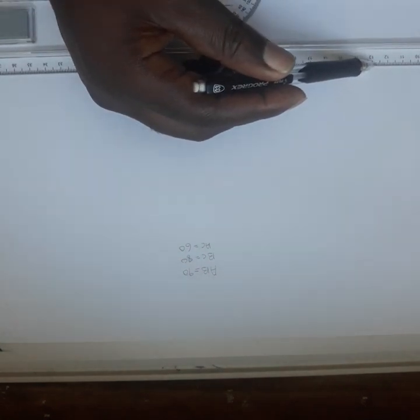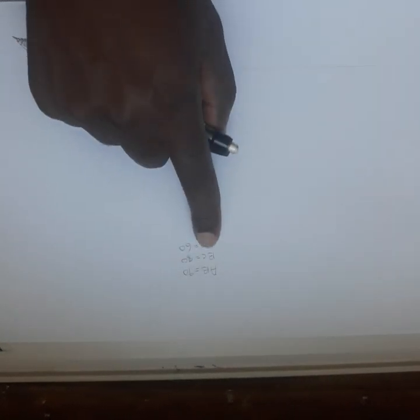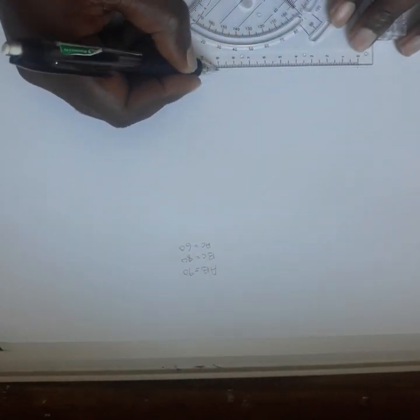So I'm going to start with AB. I'm going to draw a line and measure 90. Here's my 90. So this line is called AB. AB is 90.